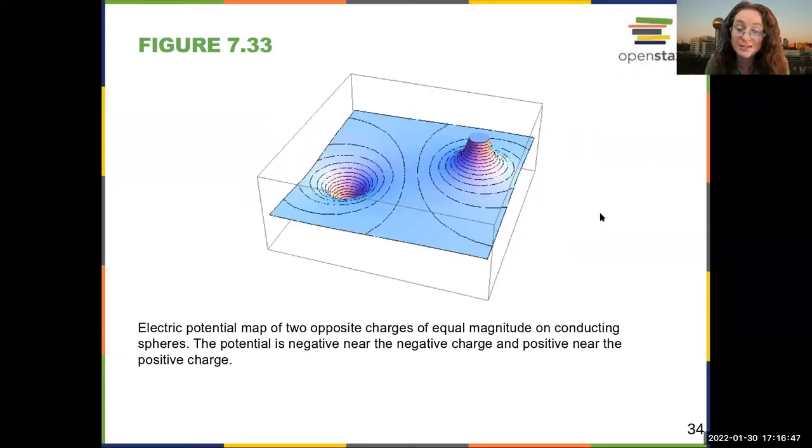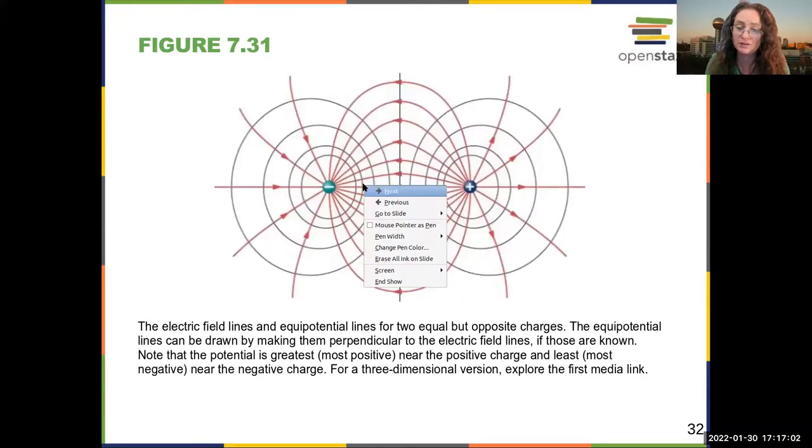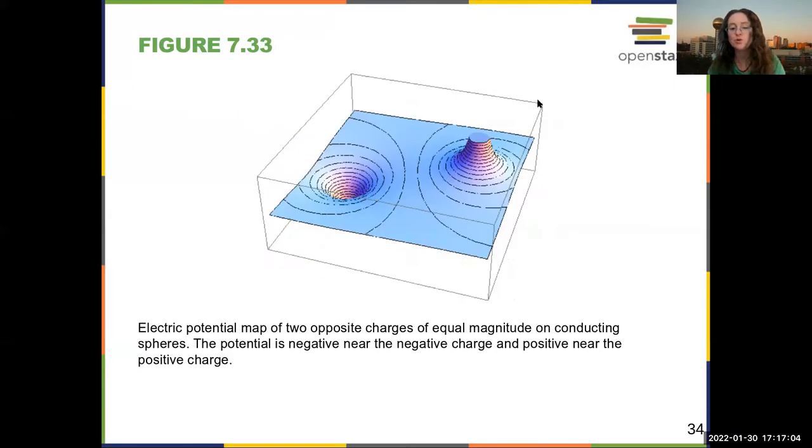You can visualize this with a 2D topological graph. The high points are high potential. So here, if you had a positive charge, it would want to roll down the hill towards the hole that you see there.